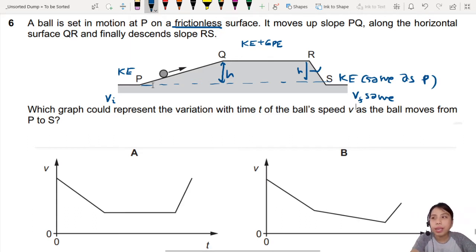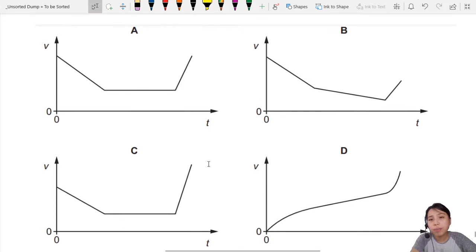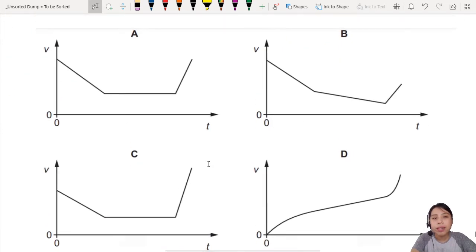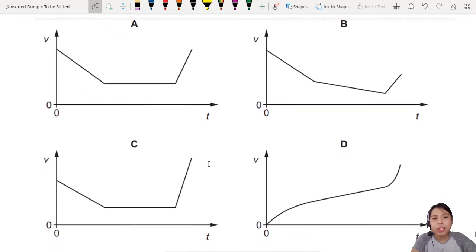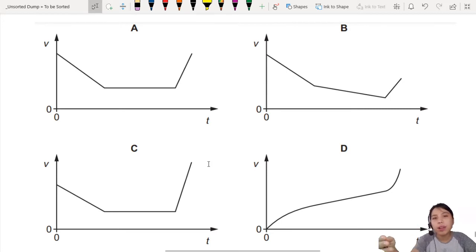That is a clue. So now we go to the graphs. Let's check the start and the end points. Among all these graphs, you should have the same velocity at the start and the end. Let's check out A. You start off at this velocity, decrease, and it comes back to the same height. Oh, that's fine.